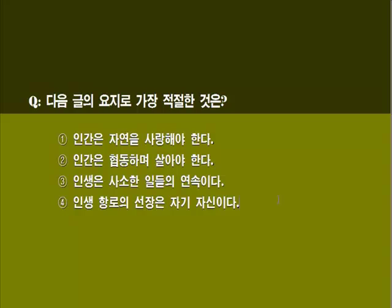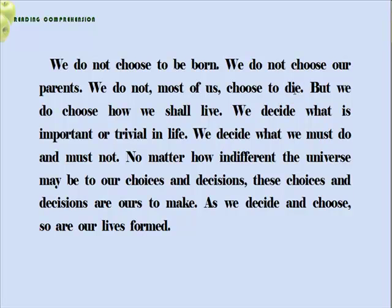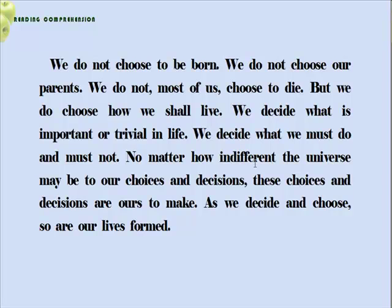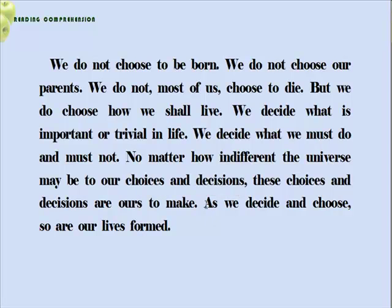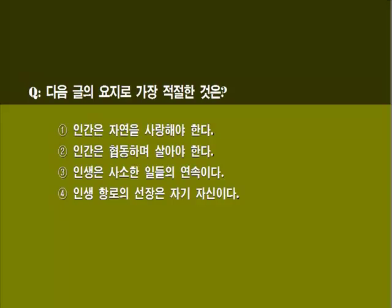문제 확인해 보겠습니다. 다음 글의 주제로 가장 적절한 것을 고르는 문제입니다. 첫 번째, 인간은 자연을 사랑해야 한다. 두 번째, 인간은 협동하며 살아야 한다. 세 번째, 인생은 사소한 일들의 연속이다. 네 번째, 인생 항로의 선장은 자기 자신이다. 우리는 태어나는 것, 우리의 부모, 그리고 대부분의 경우에 죽는 것을 선택하지 않습니다. 하지만 우리가 선택하는 것은 'how we shall live', 우리가 어떻게 살 것인가. 어떻게 살 것인가를 선택한다고 하는 것은 'choice and decision', 선택과 결정에 의해서 이루어지는 거죠. 인생 항로의 선장은 자기 자신이다. 여러분들은 네 번째 정답 하시면 되겠습니다. 감사합니다.